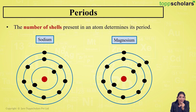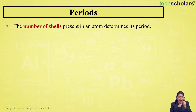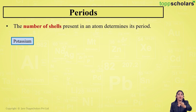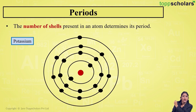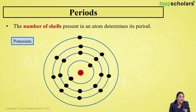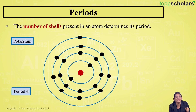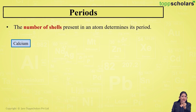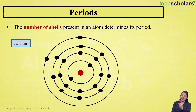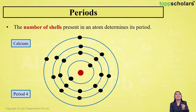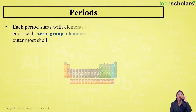Since sodium and magnesium both have three shells, they both belong to period number three. Now, what about potassium? Potassium has four shells, so it belongs to period number four. What about calcium? Calcium also has four shells, so calcium belongs to period four.